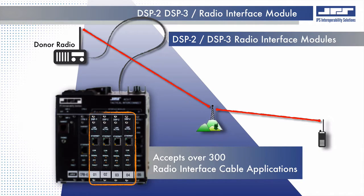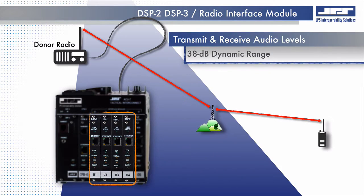JPS interoperability solutions offers over 300 different public safety and military radio interface cable applications. The receive and transmit baseband audio is conditioned through the onboard digital signal processor. The DSP module has 38 dB of receive and transmit audio dynamic range.